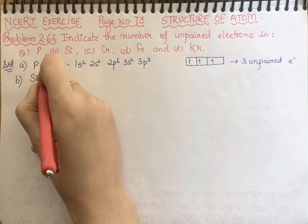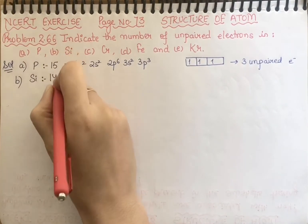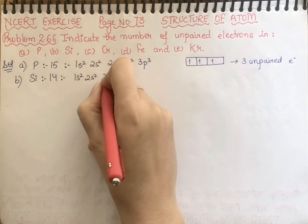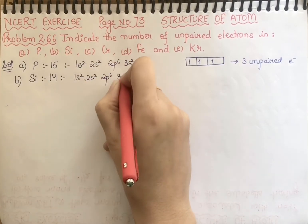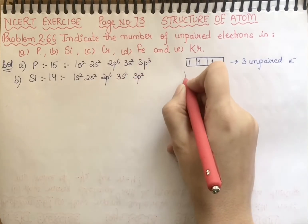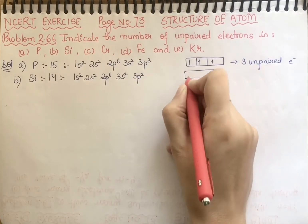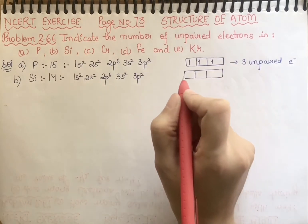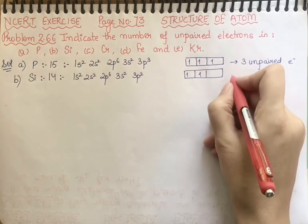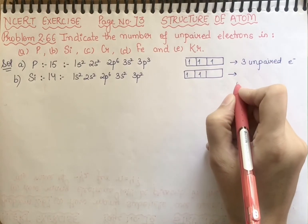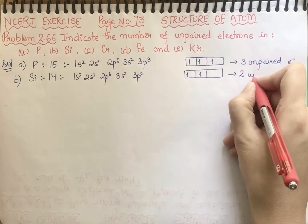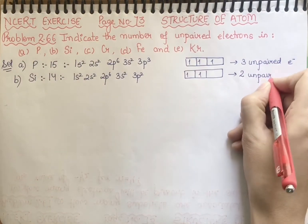Second, silicon. The atomic number of silicon is 14. So it will be 1s2, 2s2, 2p6, 3s2, and 3p2. According to Hund's rule, we do 1-1 distribution of electrons, then we start pairing. The number of electrons in 3p is 2, so unpaired electrons are 2.